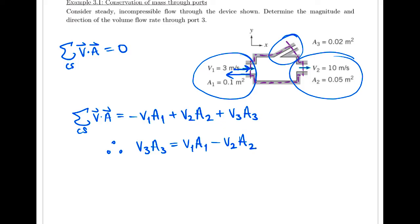It says, what's the magnitude and direction of the volume flow rate through port three? So we know the volume flow rate is the velocity times the area. So I'll rewrite that and substitute in, and then we can figure out what it is.